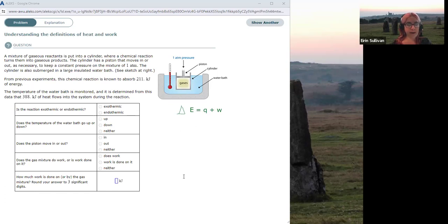Okay, so remember, we define the system as the chemical reaction or the process. So just these gases is the system. Okay, everything else is the surroundings. That means the piston is the surroundings, the cylinder is the surroundings, the water bath is the surroundings, all of that is the surroundings.